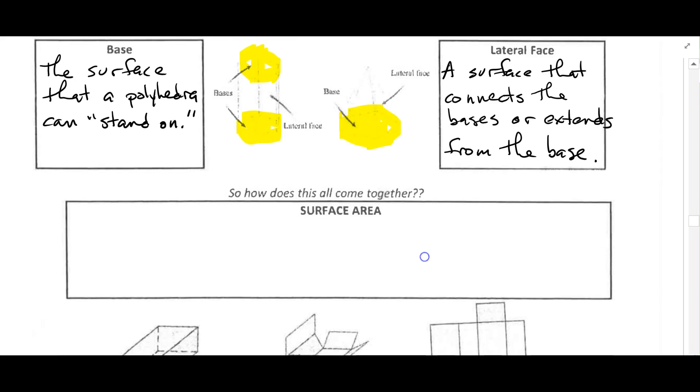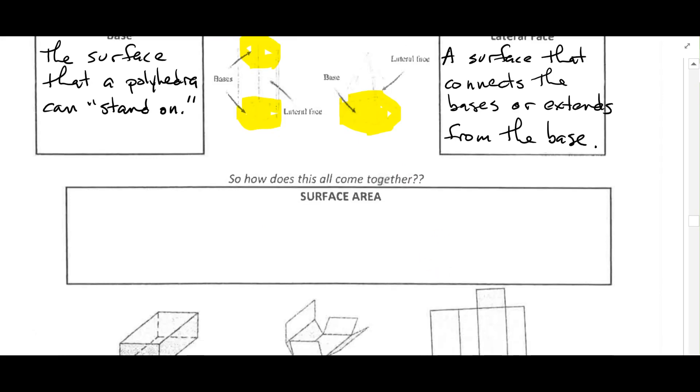This leads us to surface area. It is the total area of all surfaces of a polyhedra.